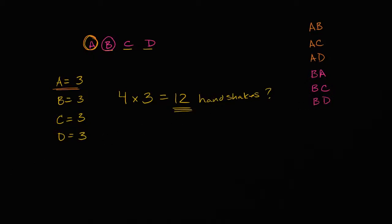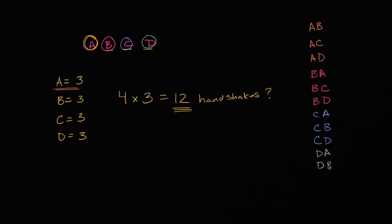Let's keep going. We have C: C is going to shake A, C is going to shake B, C is going to shake D. And then D is going to shake A's hand, D is going to shake B's hand, and D is going to shake C's hand. And you're probably saying: well, Sal, you just listed exactly 12 things.